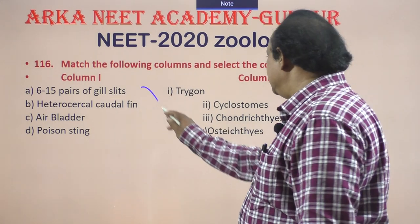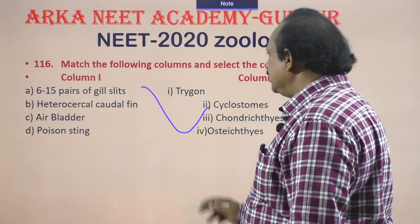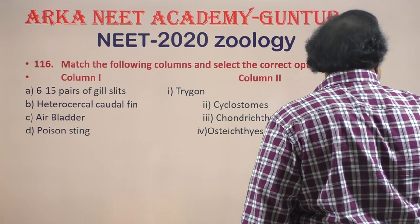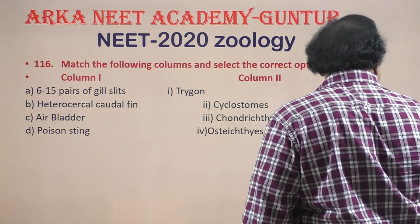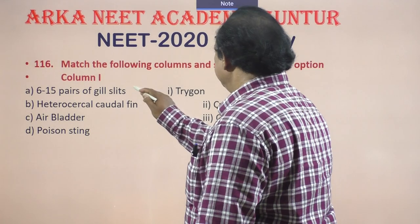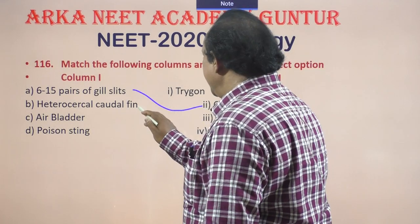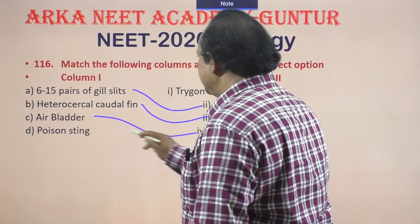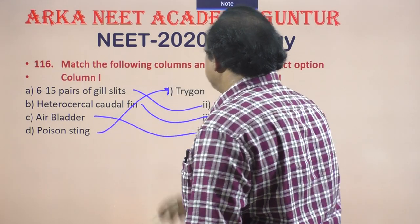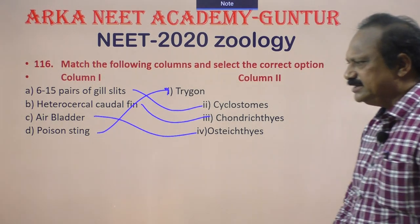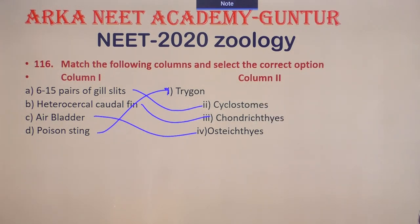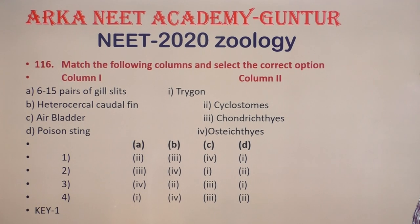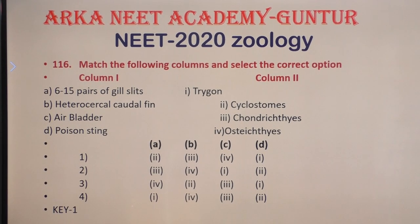6 to 15 pairs of gill slits are found in cyclostomes. Heterocercal caudal fin is found in Chondrichthyes. Air bladder is found in Osteichthyes. Poisonous sting is found in Trygon. This is the correct match and the first option is correct.